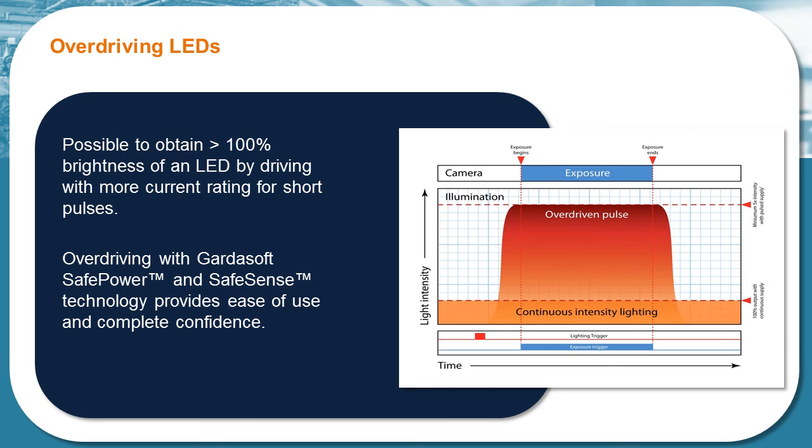For applications requiring overdriving, using a current driving lighting controller is critical. To overdrive a light by a factor of 2, you double the current. To overdrive the light by a factor of 5, you increase the current by a factor of 5. This level of accuracy is not possible with a voltage driver, as increasing the voltage will not relate to a directly proportional increase in the current.